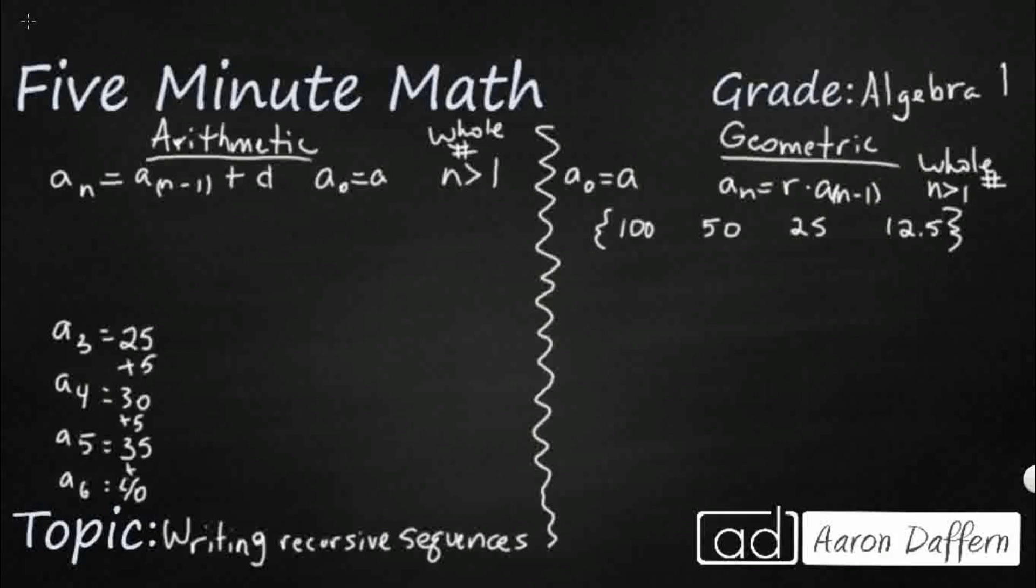So there's a few different ways that we can do this. We can say this is our basic formula, so aₙ is going to equal aₙ₋₁. And then what's the difference? How is it doing? It's growing by 5, plus 5.